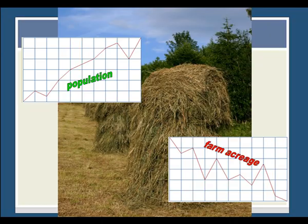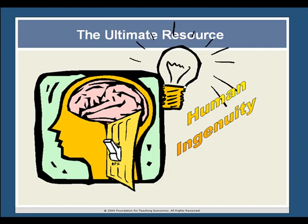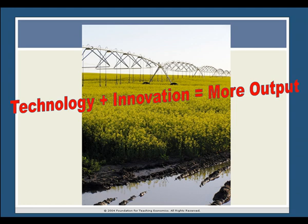But we know that didn't happen. The population of the United States continues to grow and farm acreage continues to shrink. Granted that specialization and trade play a role, of paramount importance to our long history of economic growth has been our ability through innovation to produce more and more output per acre of land. Economist Julian Simon called human ingenuity — the creativity that leads to innovation — the ultimate resource. It's creativity and innovation that has allowed us to increase production even as we face the ever-present reality of finite resources.